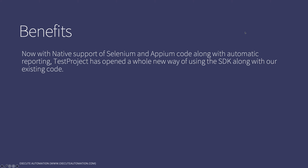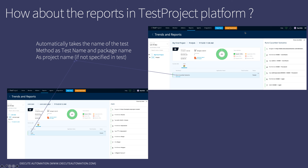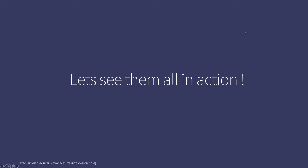With native support for Selenium and Appium code along with automatic reporting, TestProject has opened a whole new way of using the SDK with your existing code. You can even use Cucumber, Extent Reporting, TestNG, JUnit, or whatever libraries you want within your test code — that's an even more beneficial feature of the new open SDK. Reporting in the TestProject platform is automatic: it uses the test method name as the test name and the package name as the project name, creating everything for you.